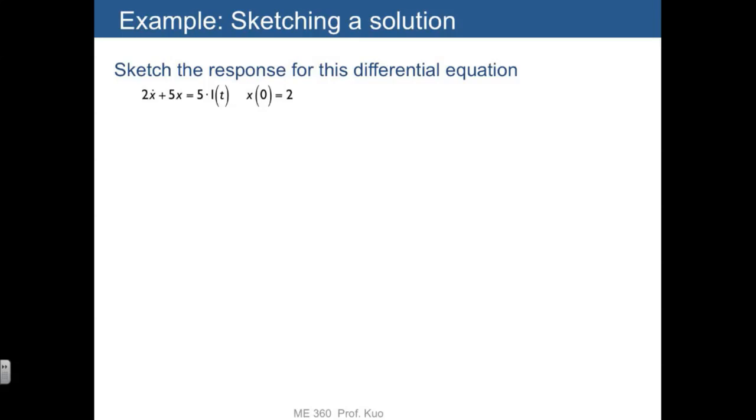Let's do a second example for the differential equation. 2x dot plus 5x equals 5 times unit step. x of 0 equals 2.